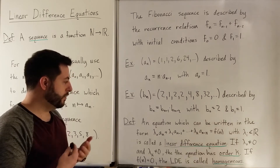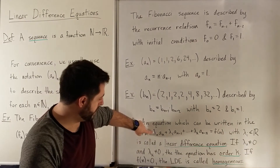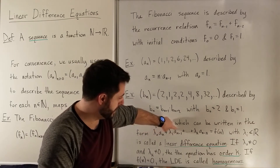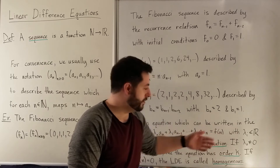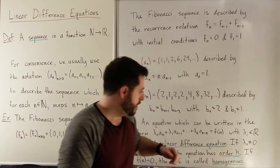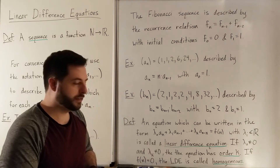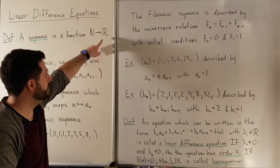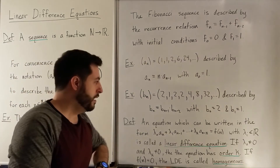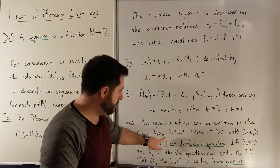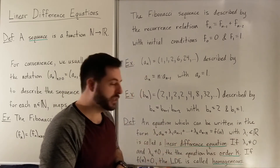Now the main definition: what is a linear difference equation? A linear difference equation is an equation that can be written in this format — a number times a_sub_n, plus a number times a_sub_{n-1}, all the way through a number times a_sub_{n-k}, equal to some function of n. All of those lambda_i's have to be constants — real numbers here, though they could also be complex. If the first term and the last term are not zero (i.e., those coefficients are nonzero), then we say this linear difference equation has order k.